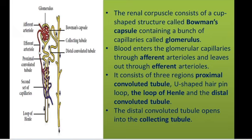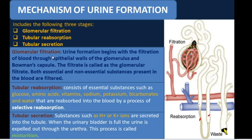The Bowman's capsule is not ending with a cup - it also extends as tubules. Look at this picture: the Bowman's capsule continues as tubules consisting of three stages. The first region is the proximal convoluted tubule, the second region is the loop of Henle which is U-shaped like a hairpin, and the third region is the distal convoluted tubule.